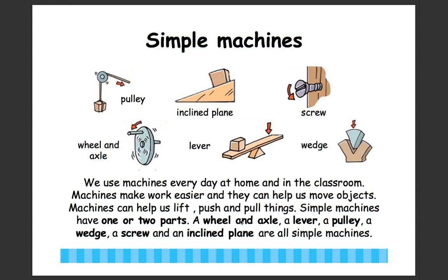The pulley uses a little wheel and a string to pull objects up. A wheel and axle is this wheel here, and the axle holds it in its center. An inclined plane helps us move things up or down from one location to another. A lever is like a wedge and a board — the board is placed on top of the wedge so it moves things up and down. And a screw you turn to screw into the wall. These are all simple machines with one or two parts.